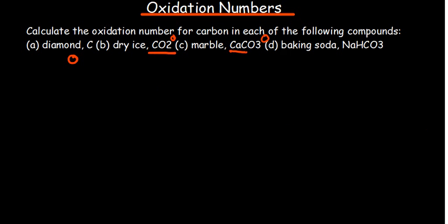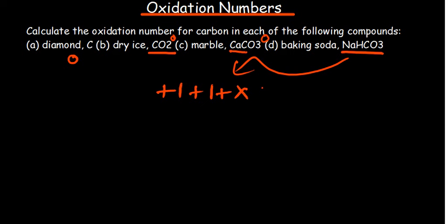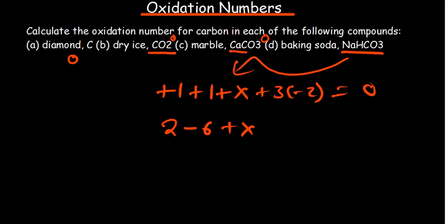For baking soda, sodium hydrogen carbonate (NaHCO₃): sodium is in group one, so its oxidation state is positive one. Hydrogen is positive one. Carbon is X. We have three oxygen atoms, each minus two. The charge is zero. So one plus one plus X plus three times negative two equals zero, giving two plus X minus six equals zero, so X equals positive four. The oxidation state of carbon is positive four.